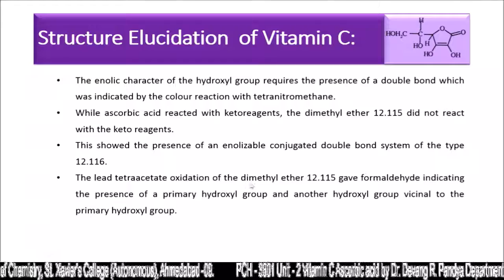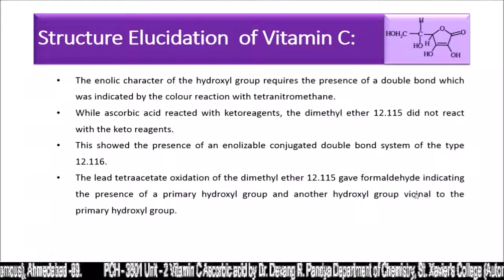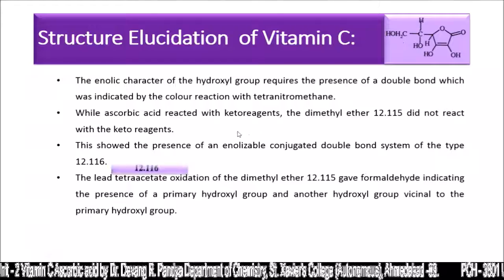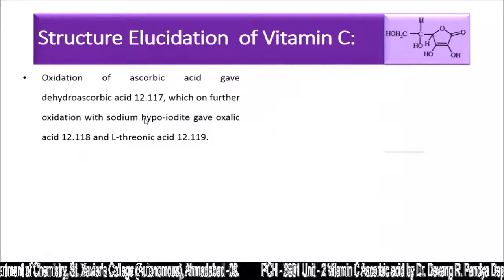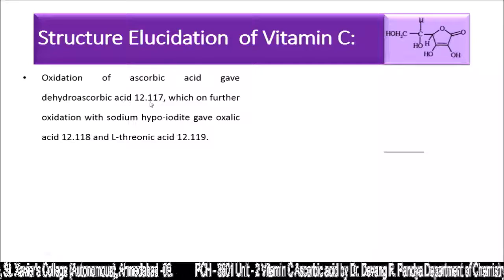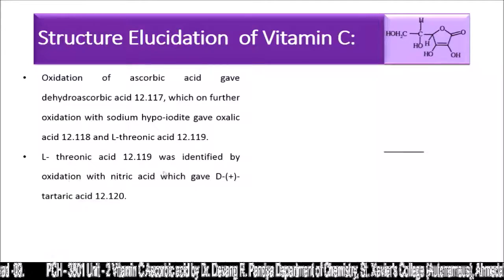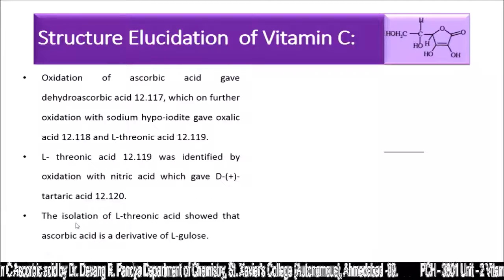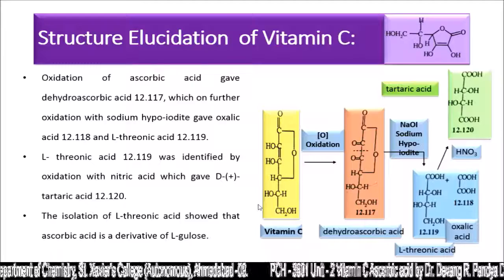Lead tetraacetate oxidation of the dimethyl ether gave formaldehyde, indicating the presence of a primary hydroxyl group and another hydroxyl vicinal to it. Oxidation of ascorbic acid gave dihydroascorbic acid, which on further oxidation with sodium hypoiodide gave oxalic acid and L-threonic acid. L-threonic acid was identified by oxidation with nitric acid, which gives tartaric acid. The isolation of L-threonic acid showed that ascorbic acid is a derivative of L-glucose.